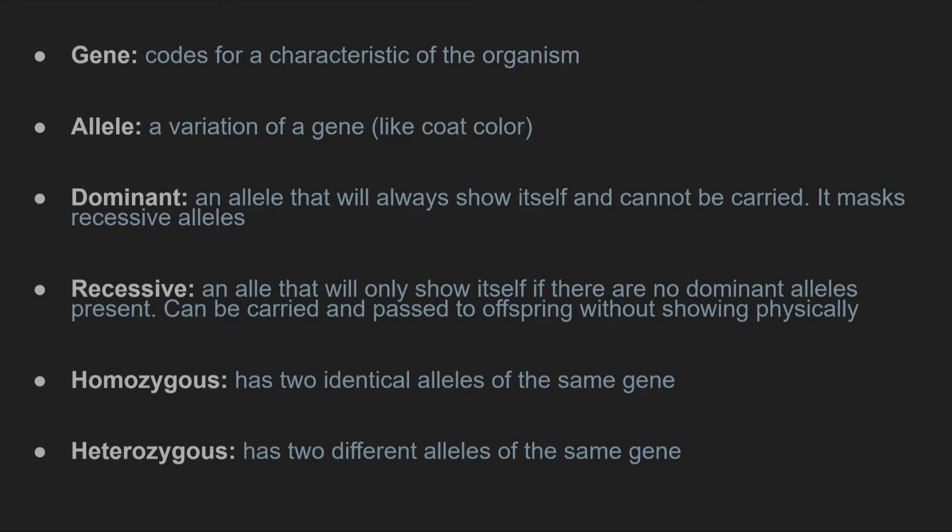Genes code for a characteristic of the organism. Alleles are variations of genes, like coat color. Dominant alleles are alleles that will always show themselves and cannot be carried — so whenever they're present in the genome, they will always show themselves physically. They always mask recessive alleles.